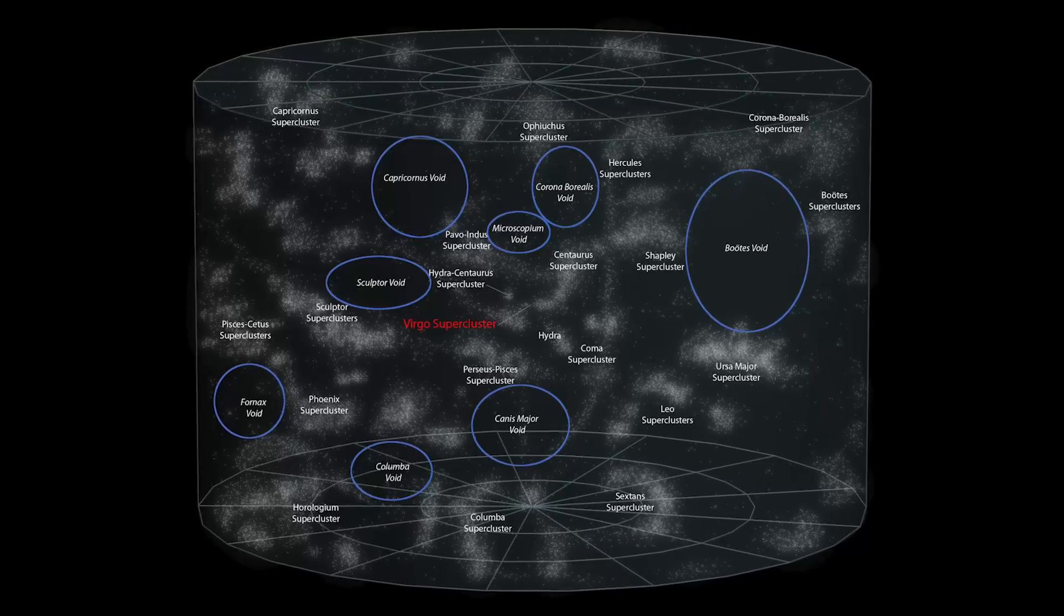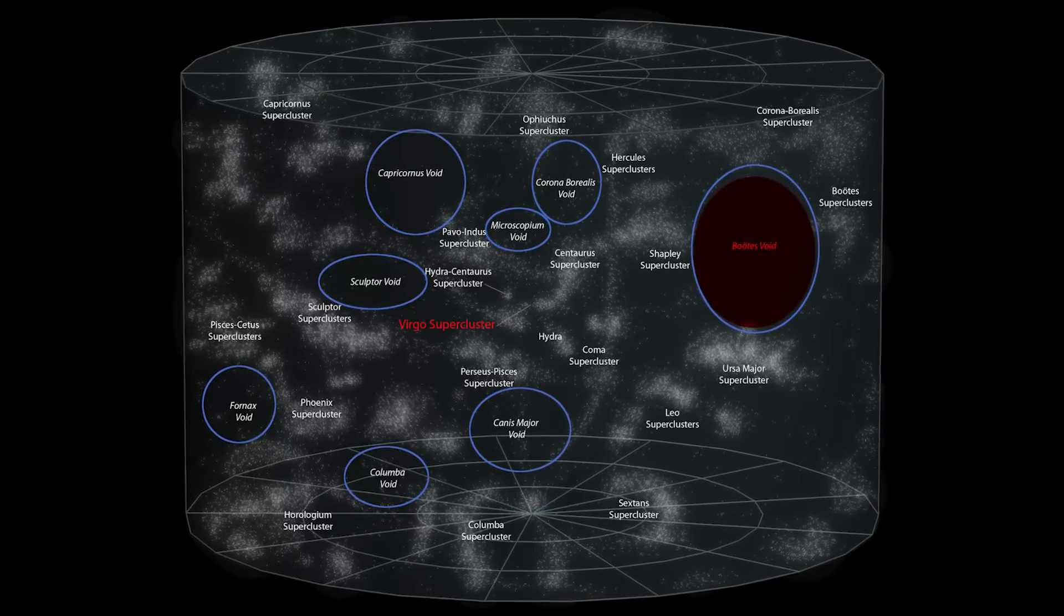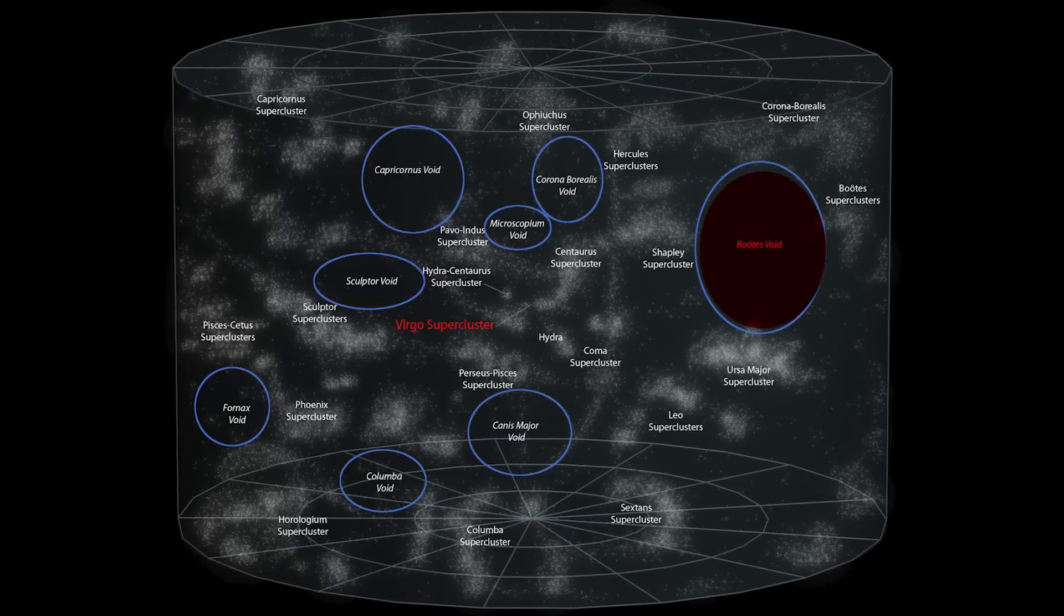If you look at the Wikipedia list of astronomical voids, the Boötes void is the second to last in the list of almost 40 voids.